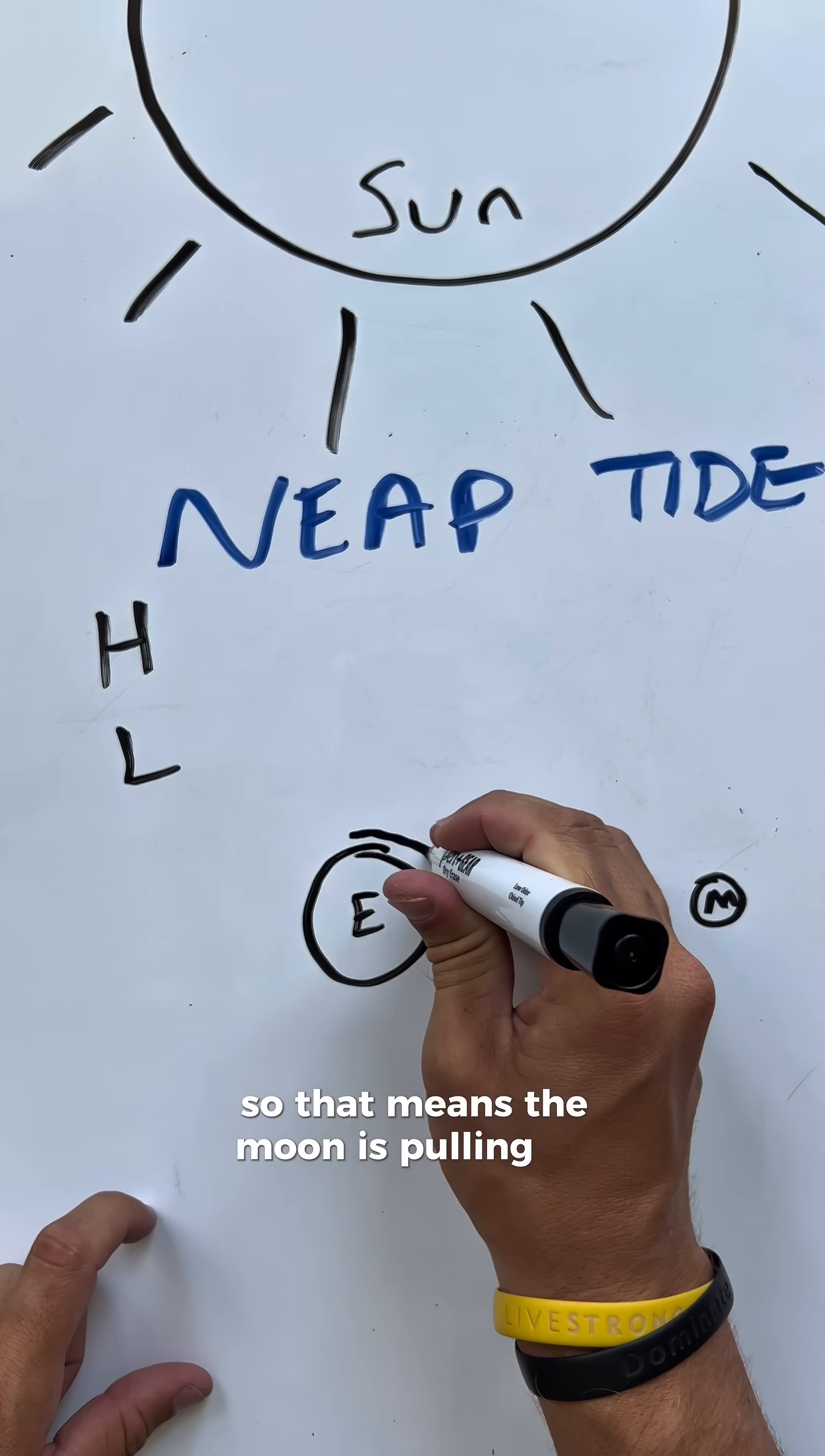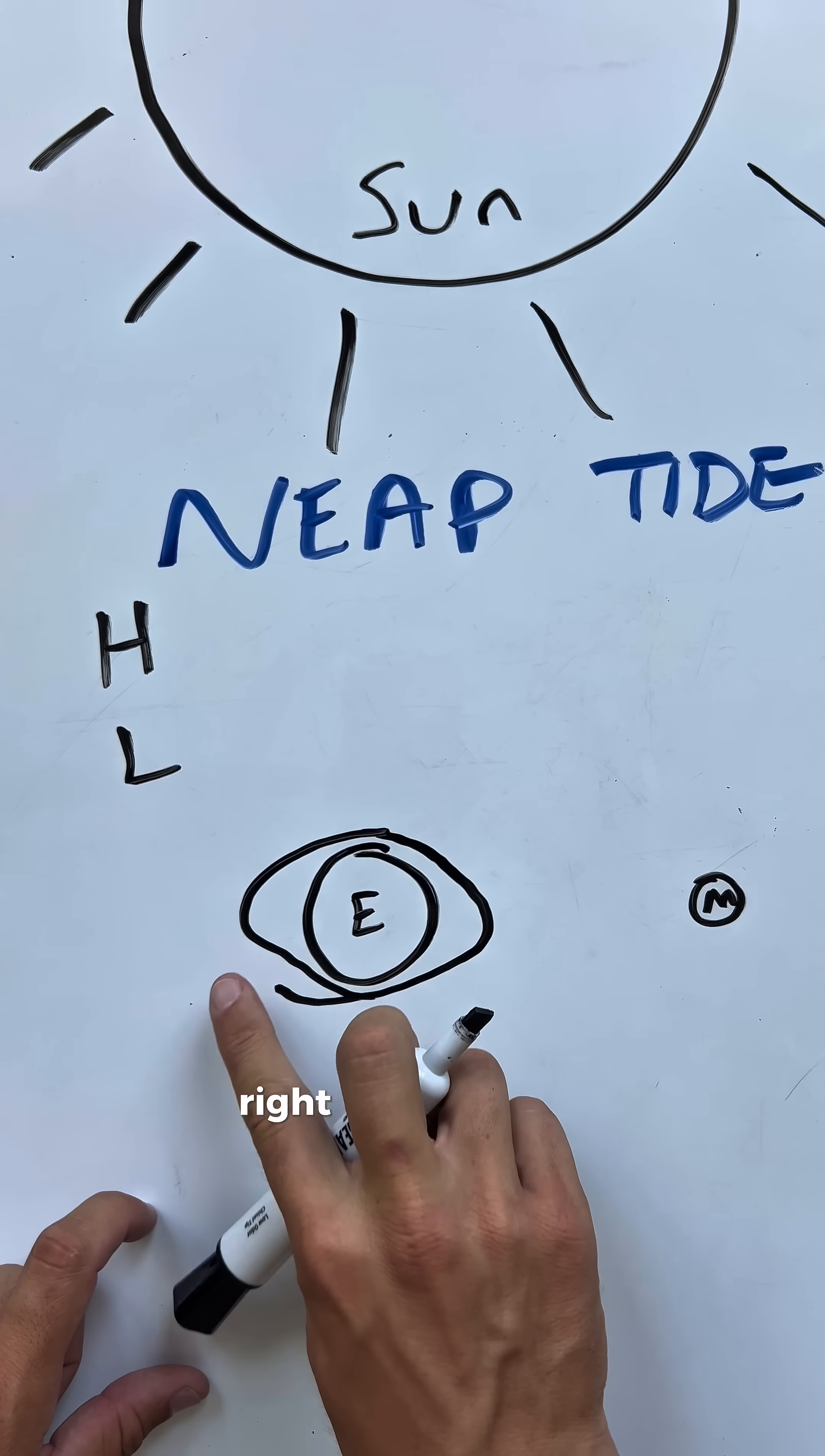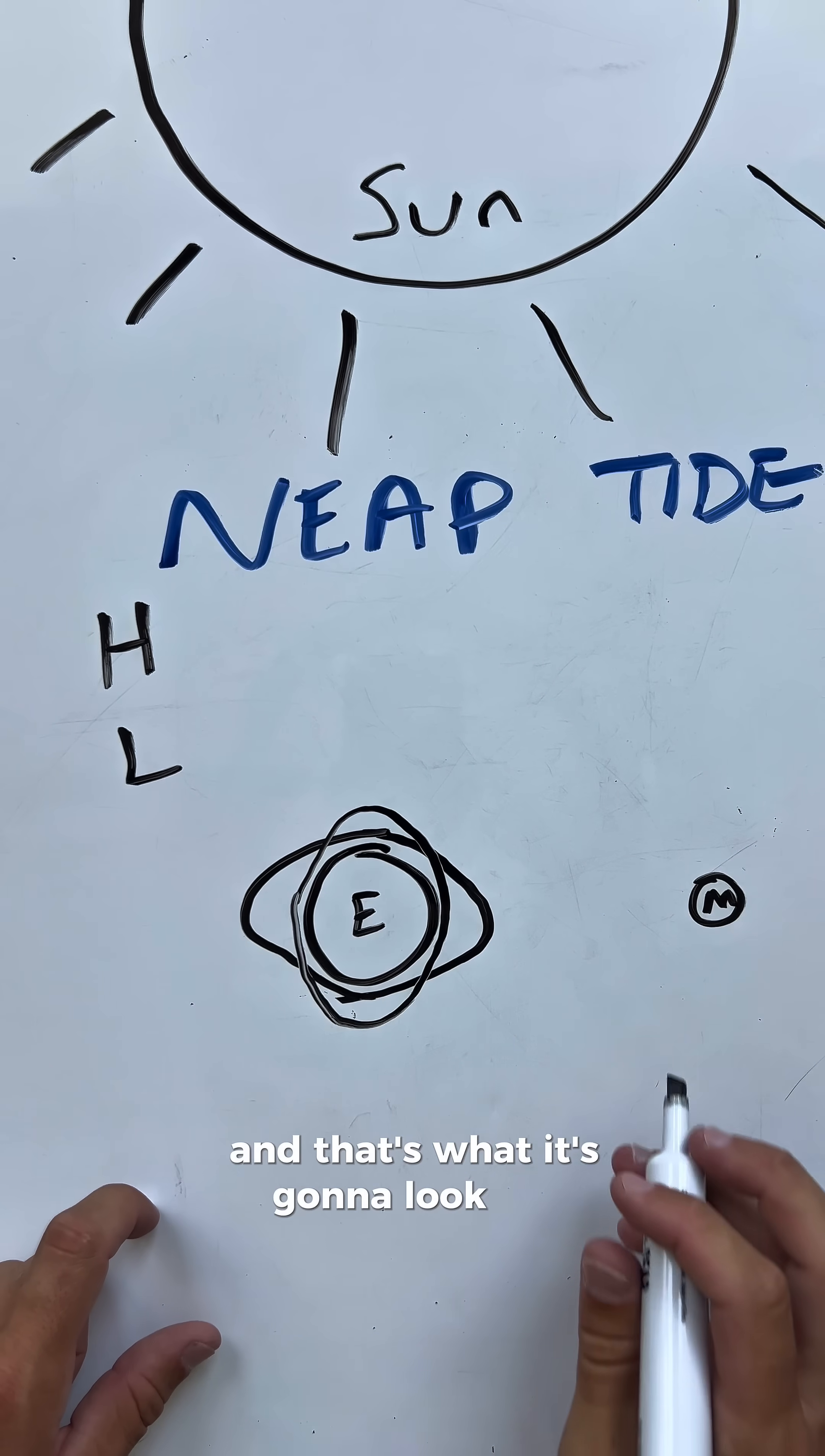So that means the moon is pulling on the earth's surface like this, and then the sun is pulling on the earth's surface like this, and that's what it's going to look like.